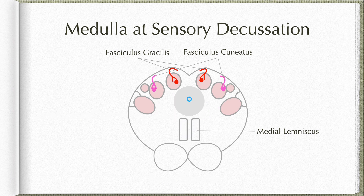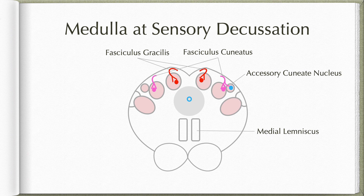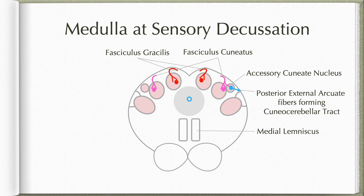Some fibers carrying proprioceptive information from the upper limb — that is from the cervical segments — relay in the accessory cuneate nucleus. These are involved with conveying non-conscious proprioceptive information to the cerebellum. The axons of the neurons in the accessory cuneate nucleus exit as posterior external arcuate fibers, collect together to form the cuneocerebellar tract, which reaches the cerebellar cortex through the inferior cerebellar peduncle.